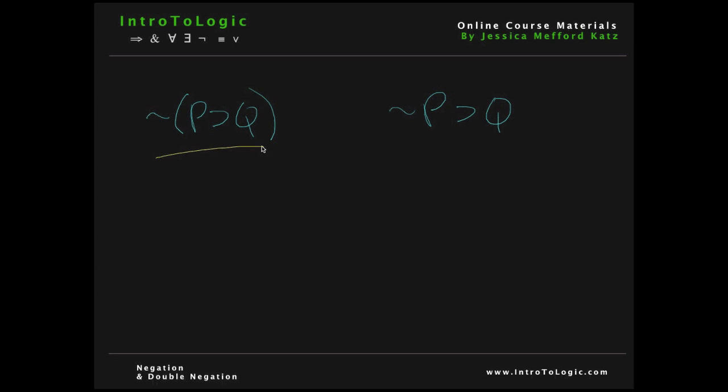According to the first reading, we have the negation of the entire sentence IF P THEN Q. And according to the second reading, we have only the negation of P as the antecedent and then the rest is just the negation of P THEN Q. So there's no negation over the consequent, which in this case is Q.